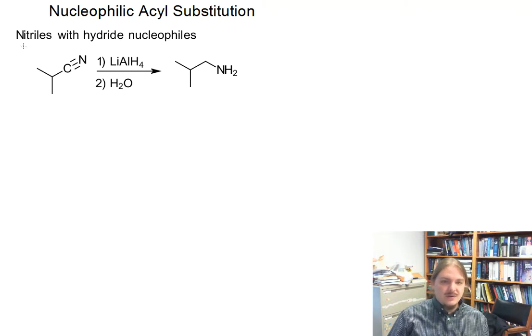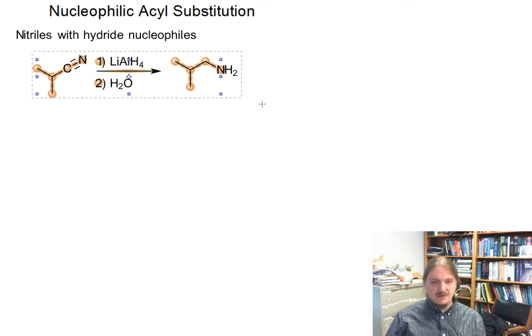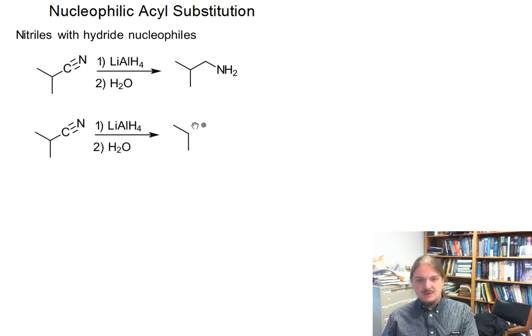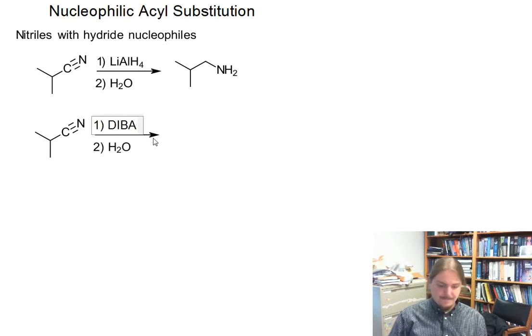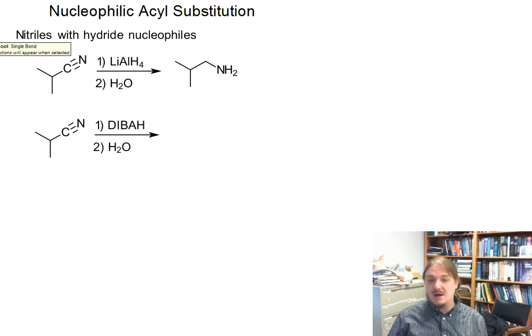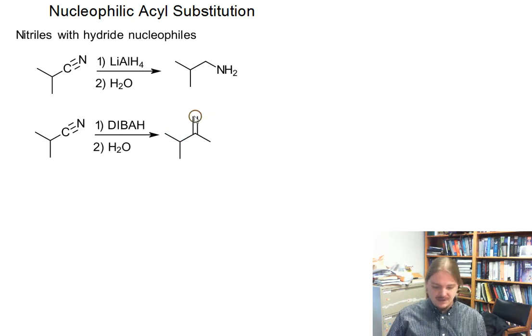What I do want to talk about, though, is that like some of the other functional groups, nitriles can be reduced by diisobutylaluminum hydride, and this reaction stops, or this reaction generates not an amine, but an aldehyde after acidic aqueous hydrolysis, and I need to go and make it clear that we're talking about acid now and not just water.